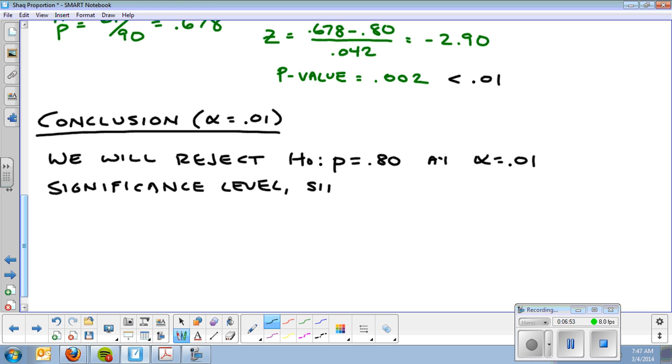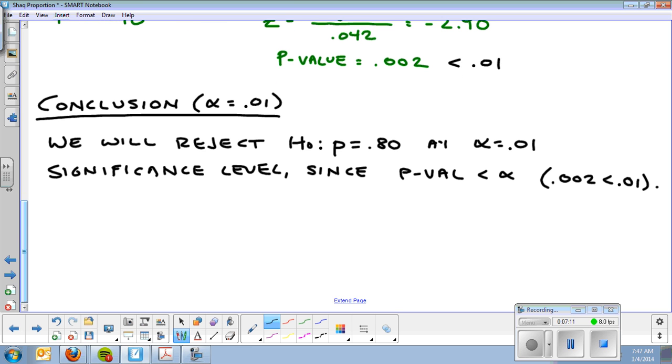Since the P-value is less than alpha, .002 is less than .01. So we said the what. We're rejecting. We said the Y. The P-value is less than alpha. And now we apply the context of the problem.